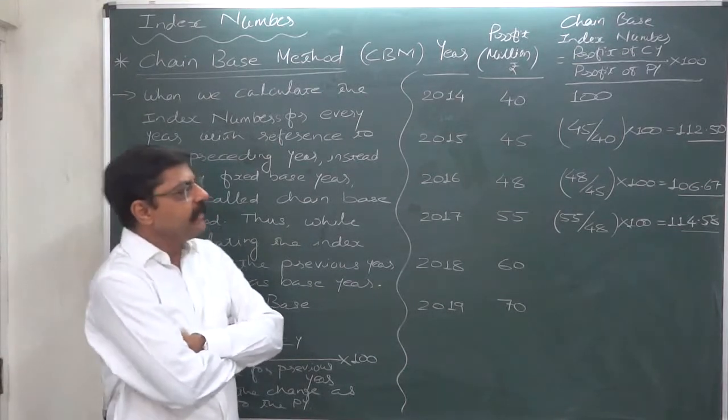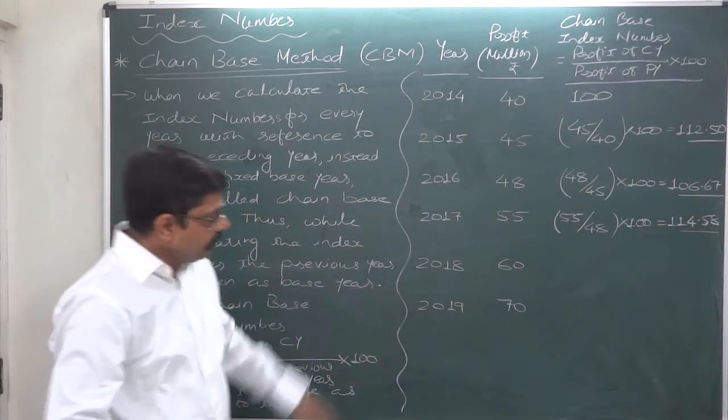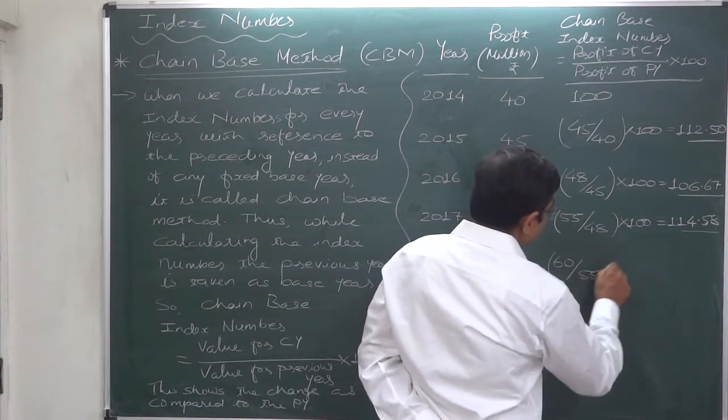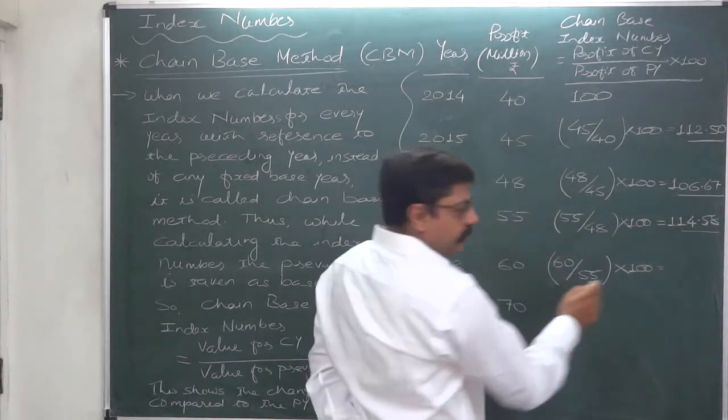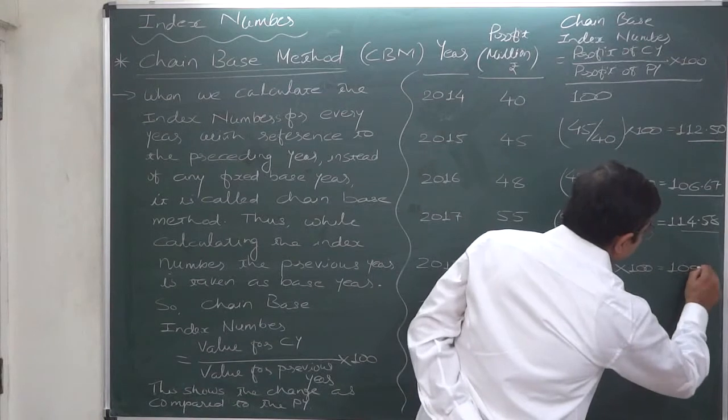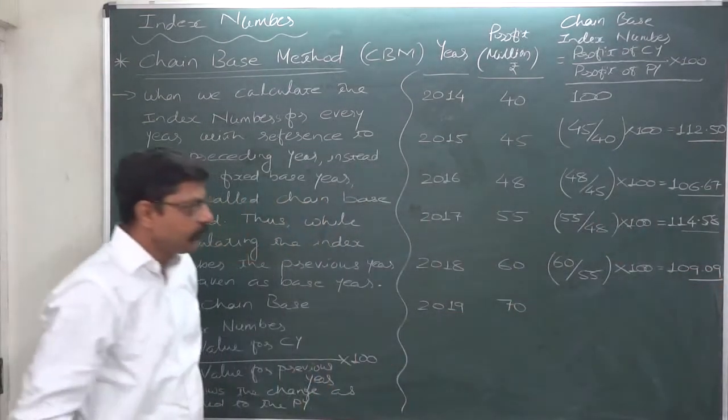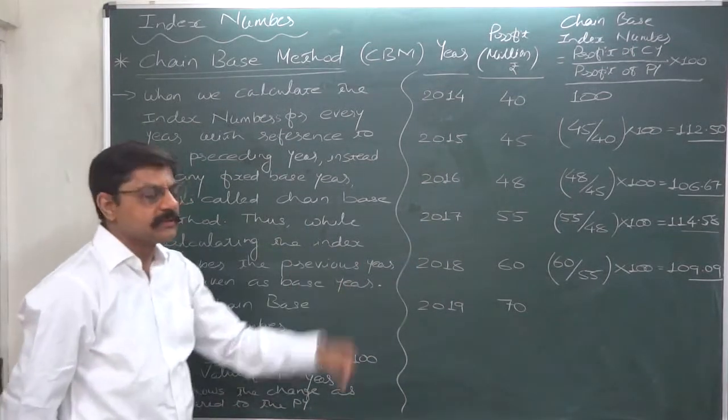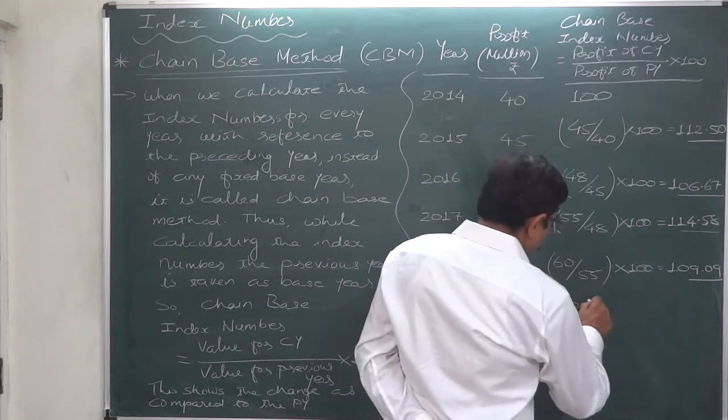In 2018, 2017 will become the base year, and it comes to 109.09. So in 2018, profit increased by 9.09% as compared to 2017. In 2019, profit was 70. In 2018, profit was 60. So proportion has increased, 116.67.